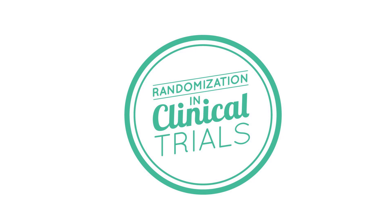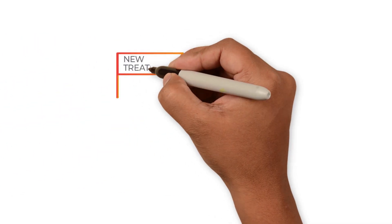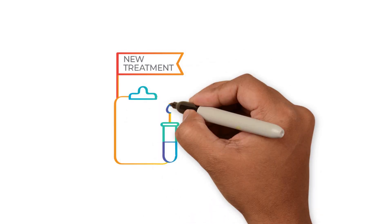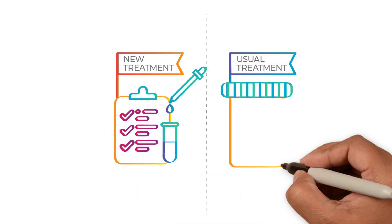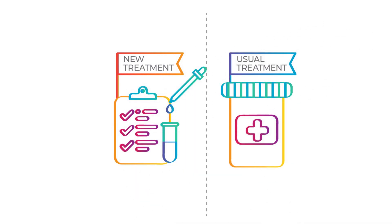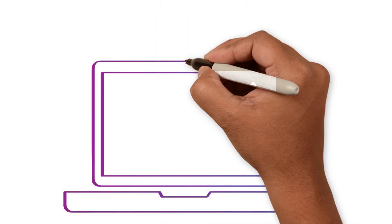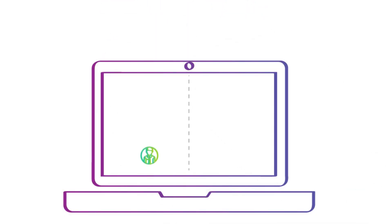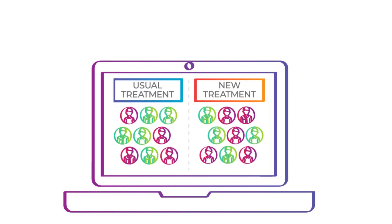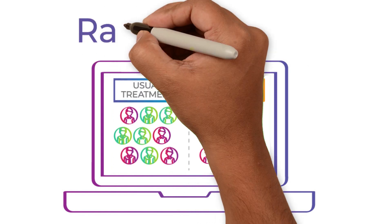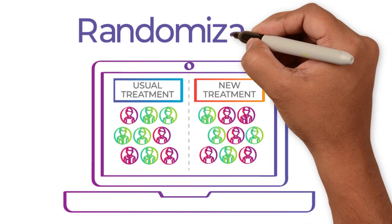Randomization in Clinical Trials. Certain cancer treatment trials test whether a new treatment works better or worse than the usual treatment. If you join such a trial, a computer may be used to randomly assign you to either the usual treatment group or the new treatment group. This is called randomization.